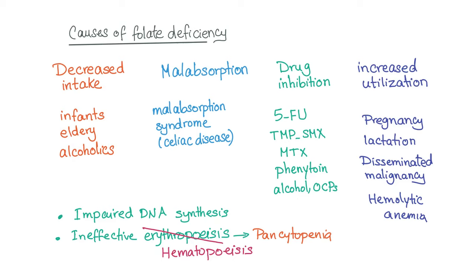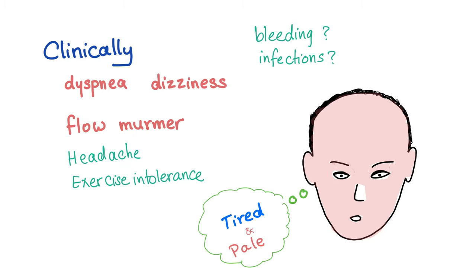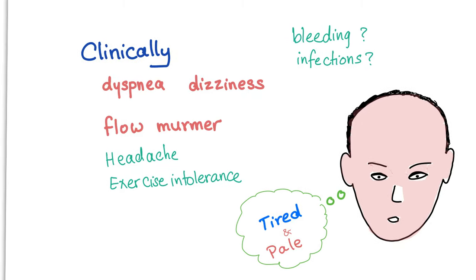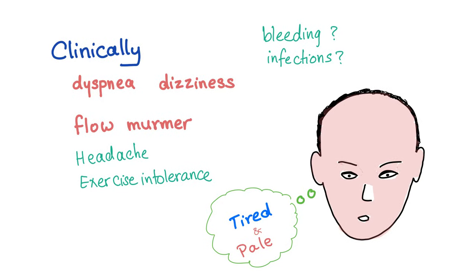Increased utilization occurs in pregnancy, lactation, disseminated malignancy, and hemolytic anemia. The result is impaired DNA synthesis, leading to ineffective hematopoiesis — not just erythropoiesis — causing pancytopenia: decreased RBC count, white blood cell count, and platelets. Clinically, the symptoms are the same as any anemia; however, bleeding and infection can also be present due to fewer platelets and fewer white blood cells.